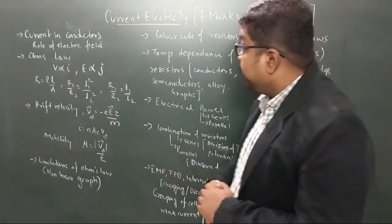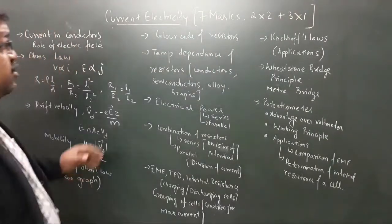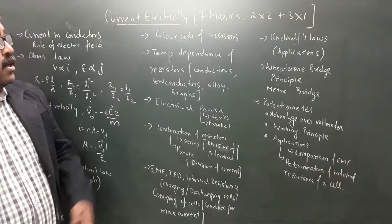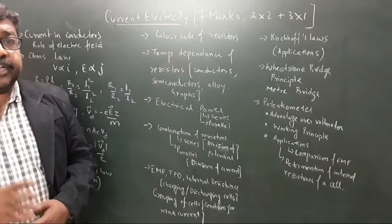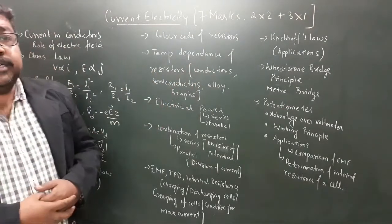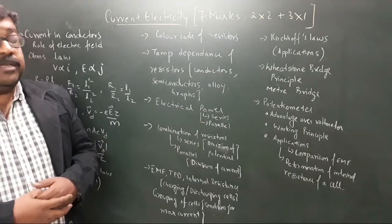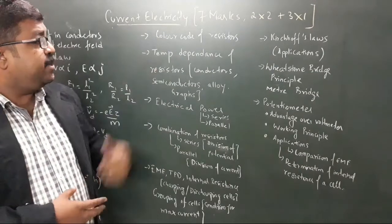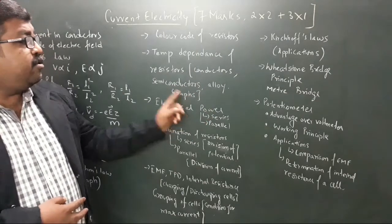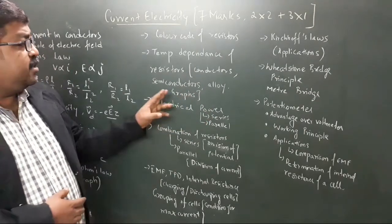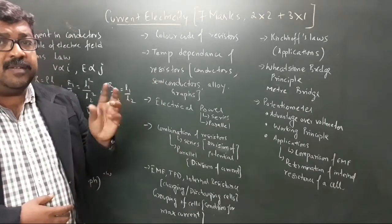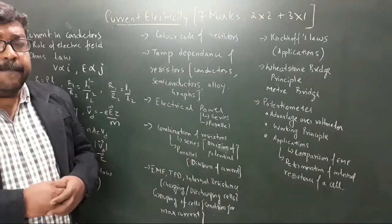After this you have color code of resistors, identification of resistors based on colors, and types of resistors. Then you have temperature dependence of resistors: how resistivity changes with temperature for conductors, semiconductors, and alloys. You have to draw proper graphs, and there's a mathematical relation that connects resistivity with temperature, which is rho equals m by n e squared tau.